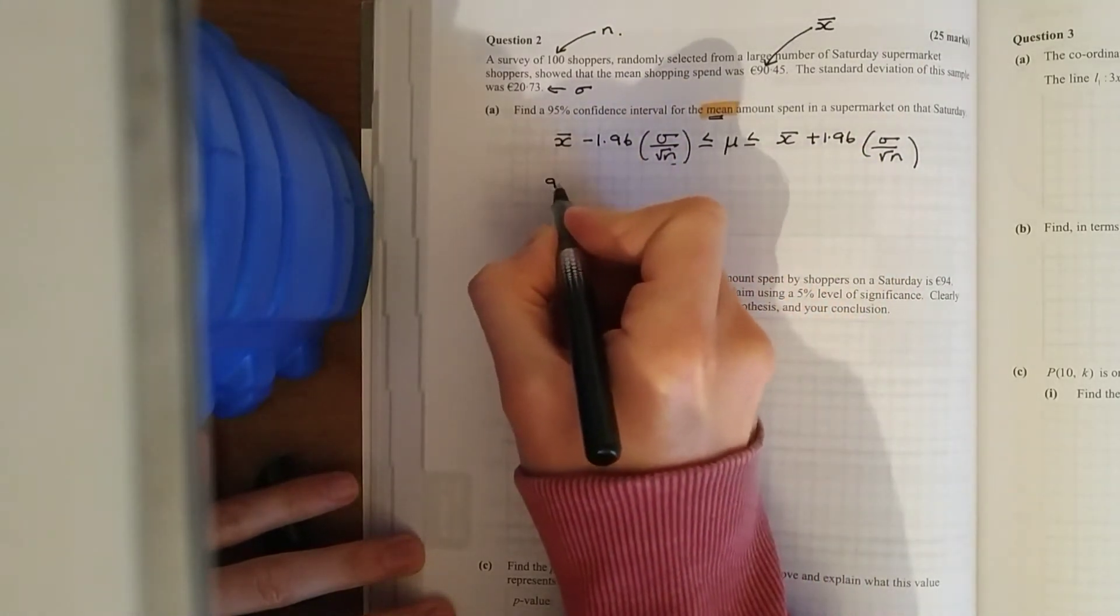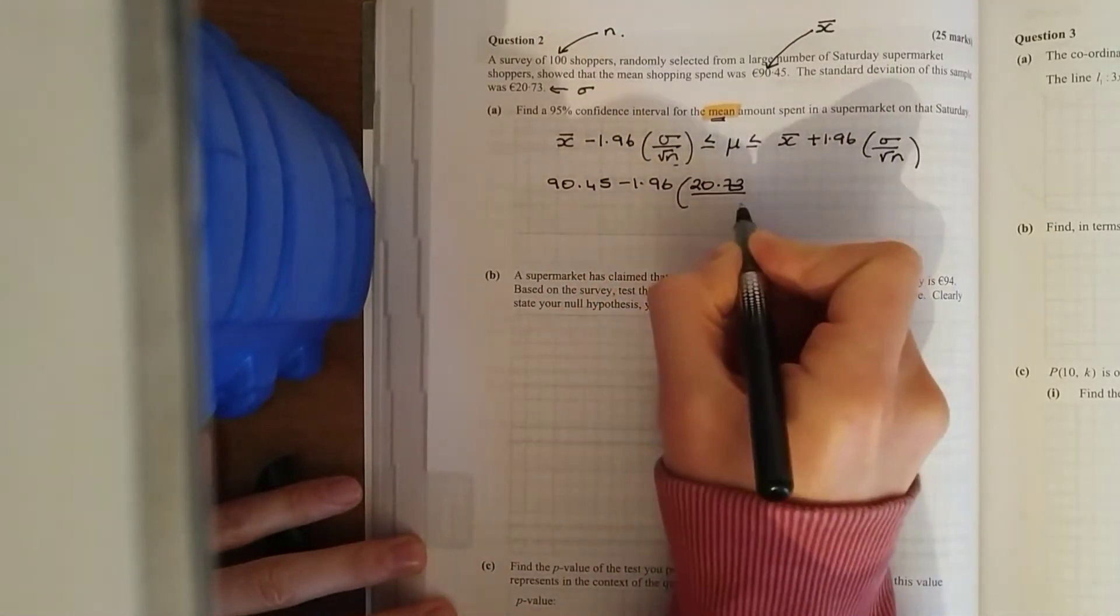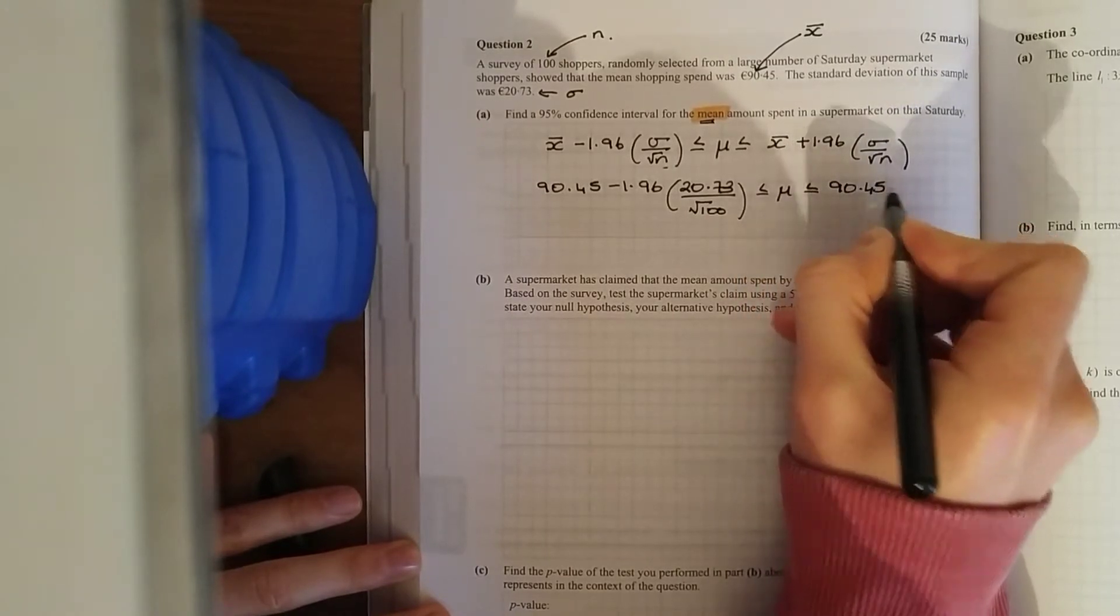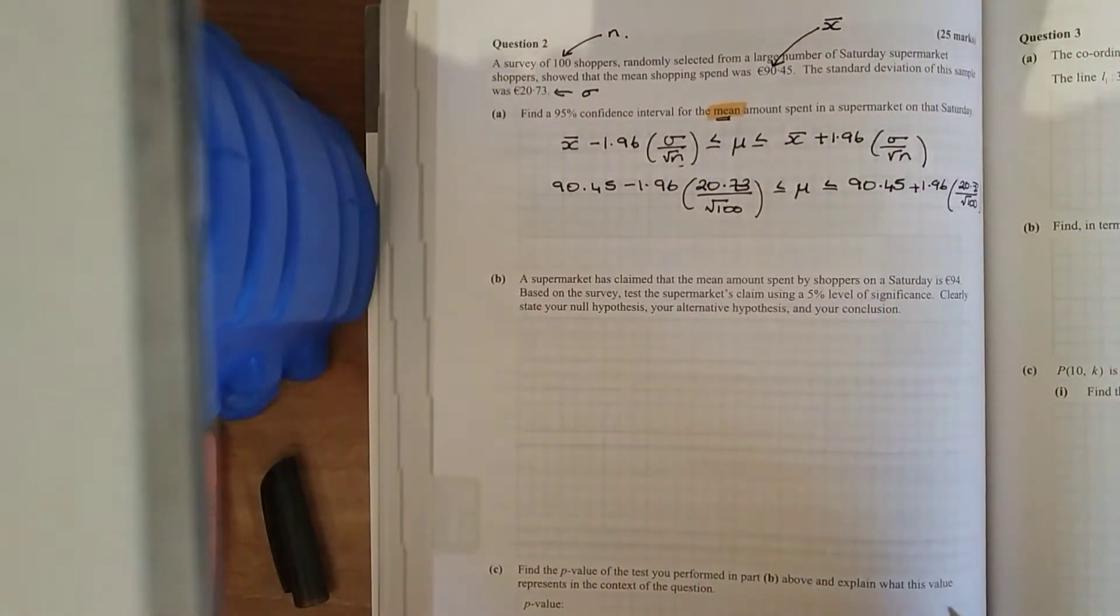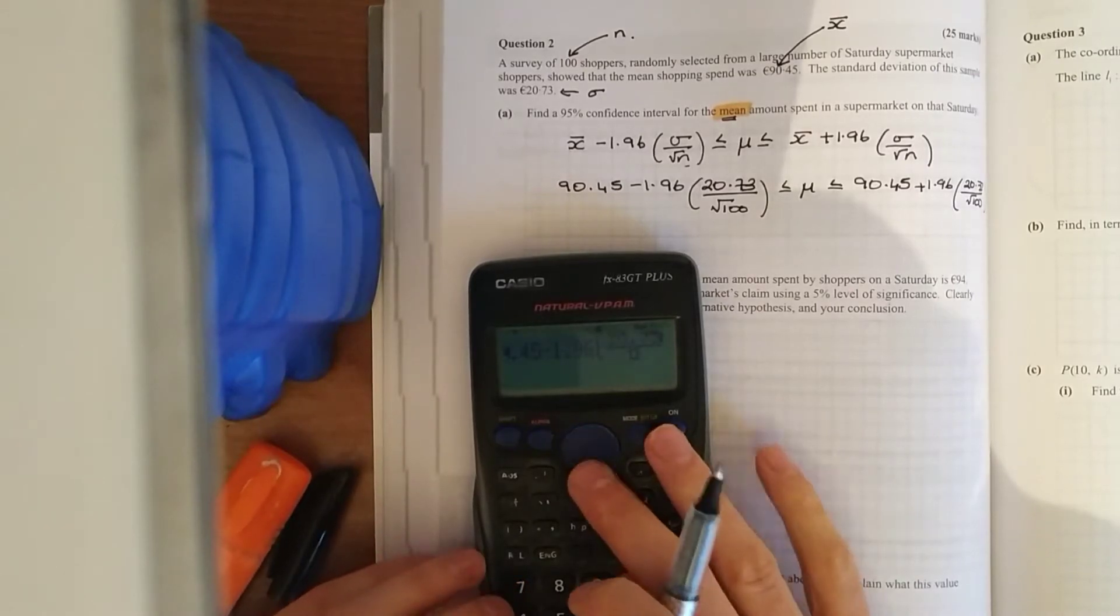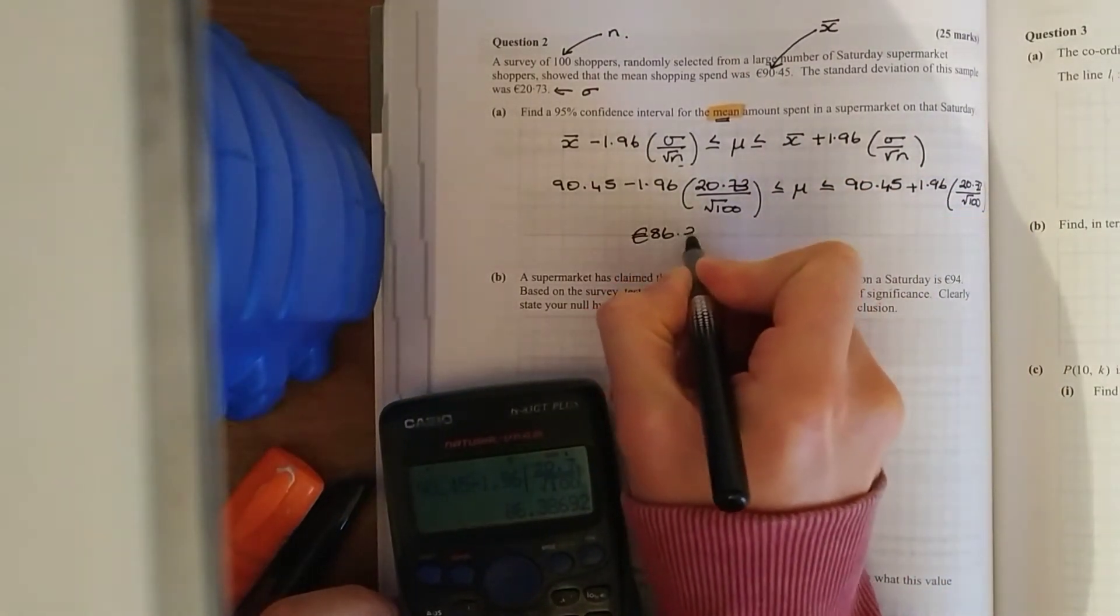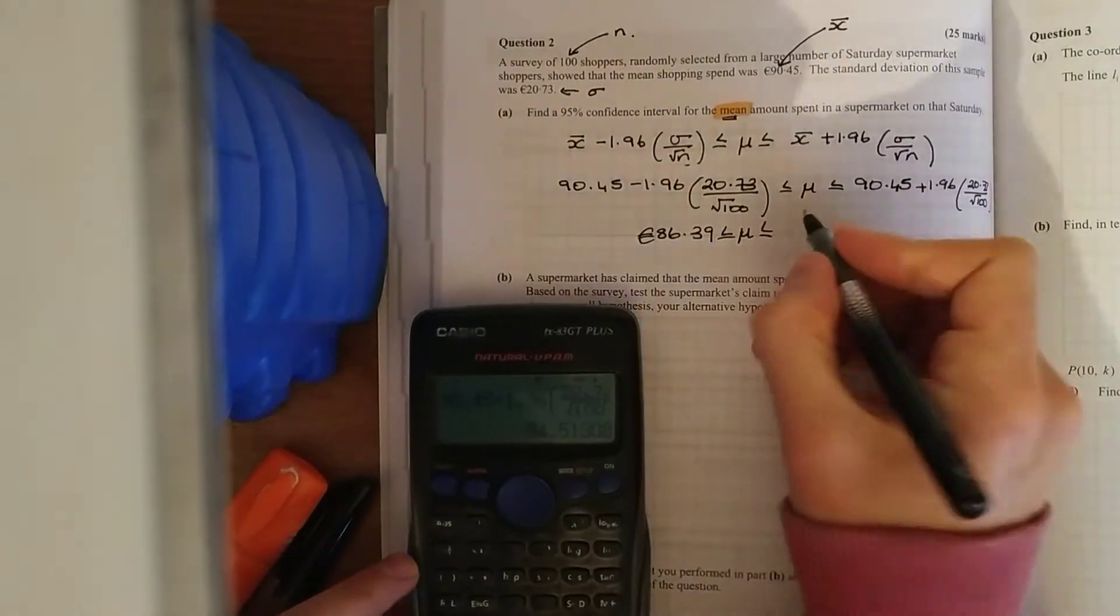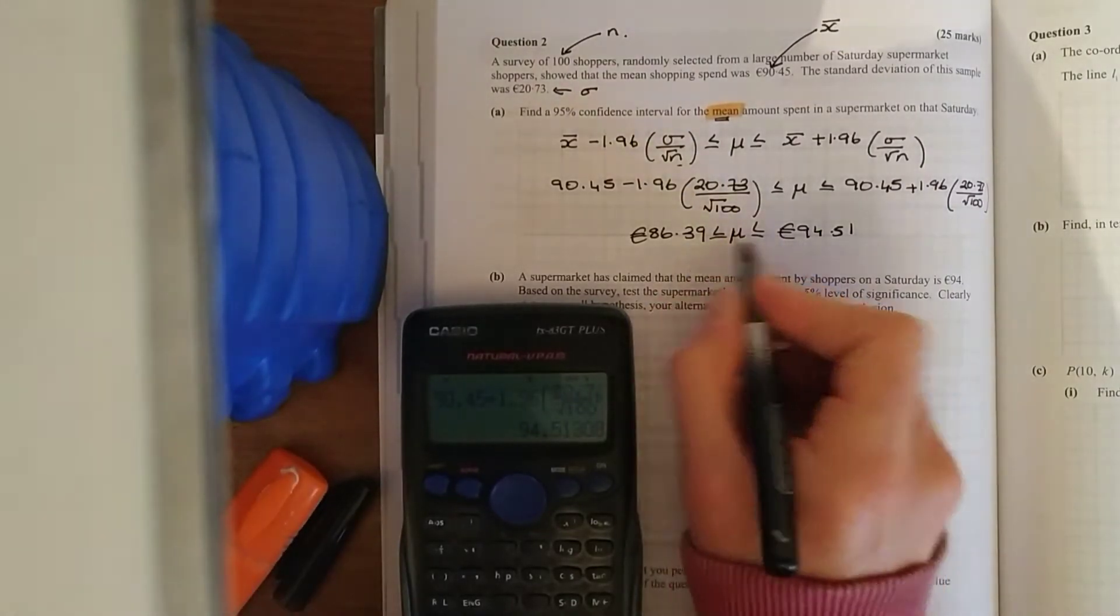Throw in these numbers, 90.45 minus 1.96 times standard deviation over root N. And then do the same on the other side, except add it all. And throw all that in your calculator there. 86.39 and 94.51. And that's just what I said. We're 95% confident that the mean amount spent will lie within this interval.